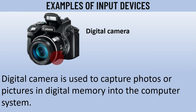We have the digital camera, which can serve both as an output device and an input device. Regarding its input function, it is used to capture photos or pictures into the computer system's digital memory. When you take a digital camera and snap an image or photograph someone, that picture is saved into the digital memory of the camera. Therefore, you have inputted a picture into the digital memory, so the digital camera serves as an input device when capturing photos and pictures.